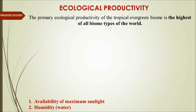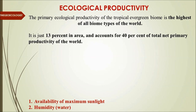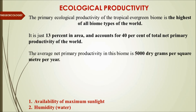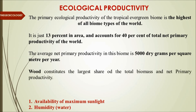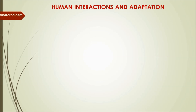The primary ecological productivity of the tropical evergreen biome is the highest in the world. It occupies just 13 percent of the area but accounts for 40 percent of the total net primary productivity (NPP). The average net primary productivity is 5,000 dry grams per square meter per year — the unit to remember. Wood is the largest contributor to total biomass, and the main reasons are the availability of maximum sunlight and humidity throughout the year.